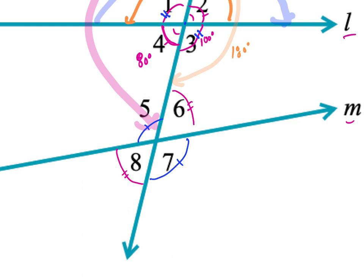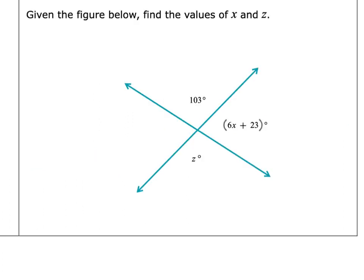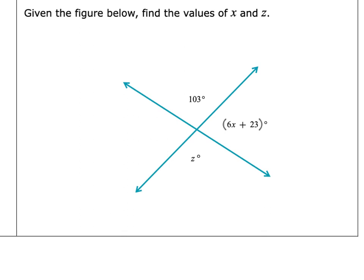Now let's use that to solve problems. Angle z is vertical to the angle measured at 103 degrees, so they're equivalent. Therefore, the measure of angle z equals 103 degrees. That's all the work you have to show — it's that simple.